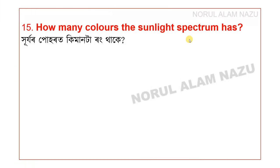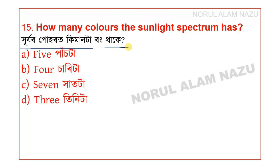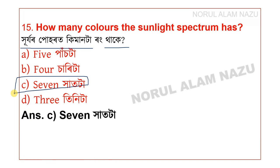Question 15: How many colors does the sunlight spectrum have? There are seven colors in the sunlight spectrum.